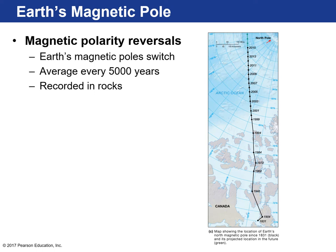Here is the changing magnetic north pole from 1831 to about 2015. Over the course of 150 years, our magnetic north pole has moved a very large distance. And even crazier, we have what we refer to as magnetic polarity reversals — where the north pole becomes the south pole and the south pole becomes the north pole. On average, it happens about every 5,000 years, and these reversals are recorded in volcanic rocks. That's how we know they happen.